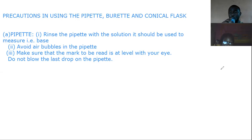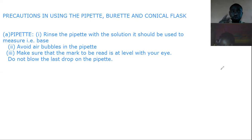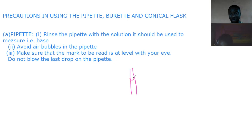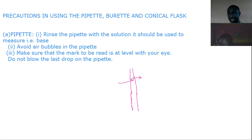Some persons use their mouth for the pipette. If you are not good at that, there is something called the pipette filler. Avoid air bubbles in the pipette — the moment you see air bubbles, pour it out. Make sure that the mark to be read is at your eye level. Do not read from the top of the meniscus — you read from the lower meniscus. That's where you take your readings from.